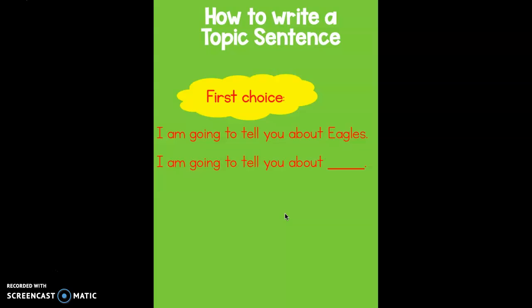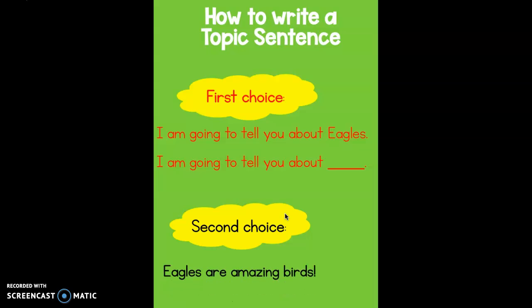If you want to go above and beyond and make your writing really exciting, we have a second choice. Mine says: 'Eagles are amazing birds.' I know that because in my research I read all of these great facts about Eagles that showed me they're amazing birds. Maybe you want to think of a really cool sentence to start your writing with about your animal, and then you can choose the second choice instead.